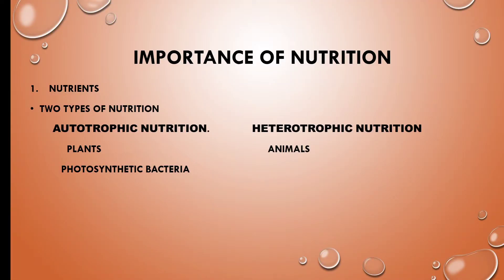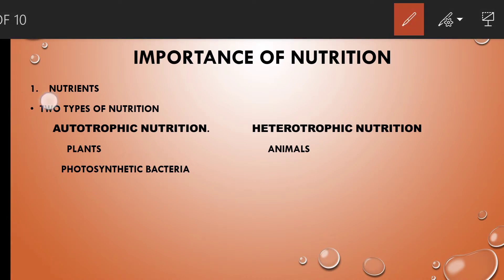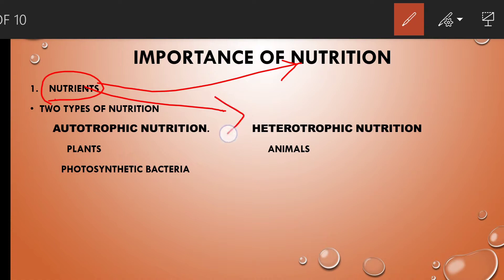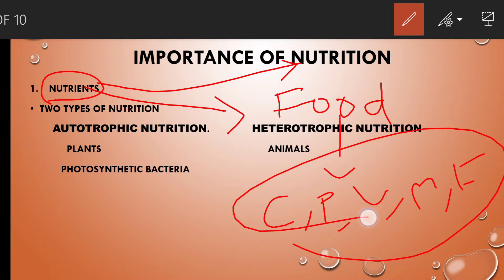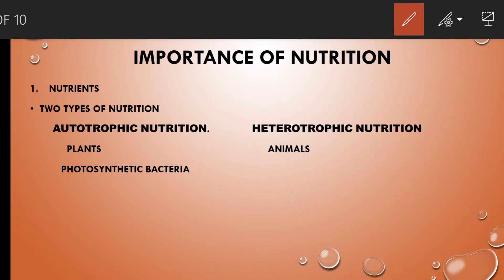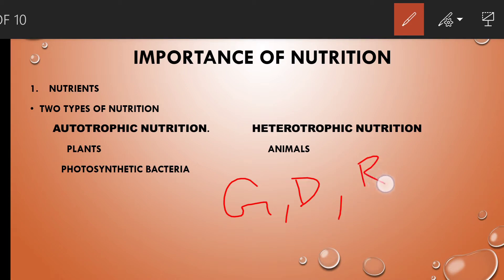The first concept is the importance of nutrition. So what is nutrition? Nutrition means intake of nutrients. Nutrients are present in our food — they are chemical compounds like carbohydrates, proteins, vitamins, minerals, and fats. Food is needed by each and every organism for their growth, development, repair of cells, and to maintain body temperature.